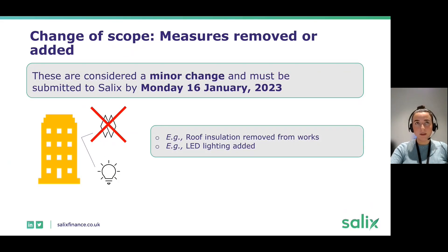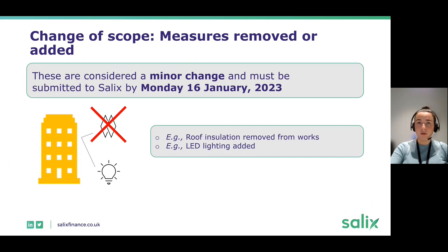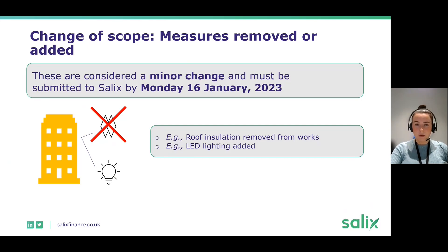The changes that are still being accepted are considered minor changes, which include removing or adding energy efficiency measures to the project. For example, removing existing roof insulation or adding an LED project alongside other measures is fine. The deadline for these changes is the 16th of January, after which we'll no longer be assessing those types of changes due to deliverability by the March 2023 deadline.